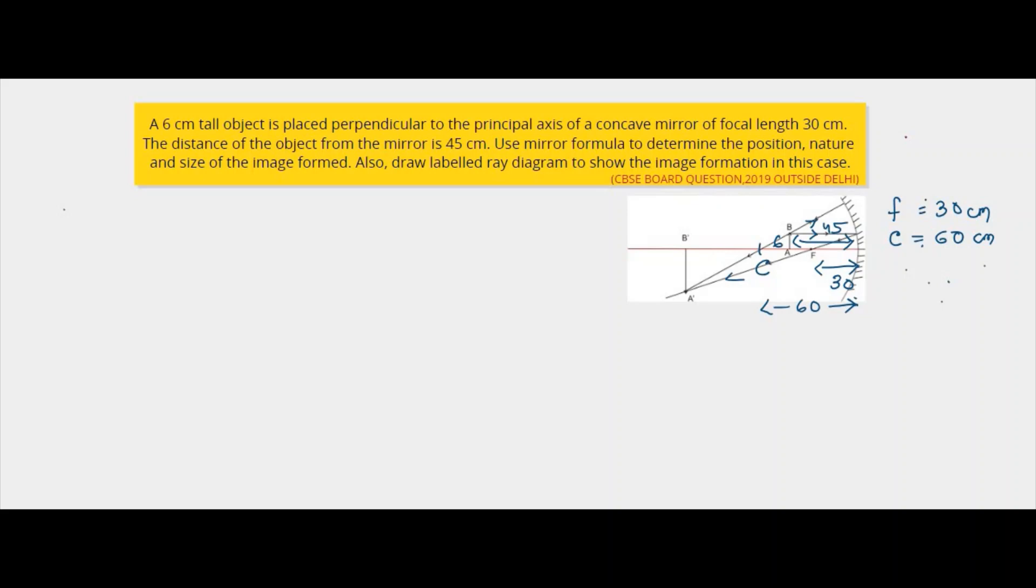Another one will go through the center of curvature. It will be directed towards the center of curvature after the reflection. So these two reflected rays will meet at this point and this will be the point where the image is formed. So this distance is known as the image distance.